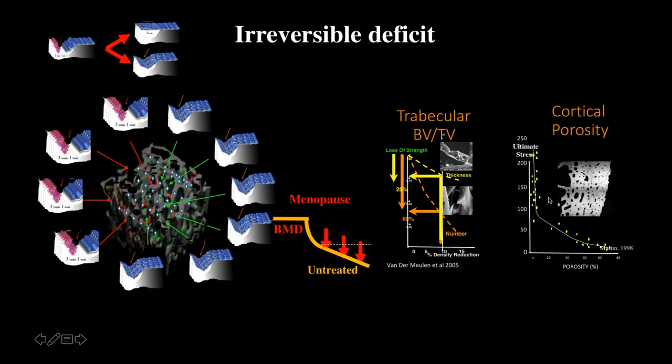Because of two abnormalities — the increase in the rate of remodeling so more bone is being turned over, and the negative balance in each remodeling site — there is structural decay. The trabeculae break up, the cortical bone becomes more porous, and there is a decrease in strength disproportionate to the bone loss. By old age, an elderly woman has lost half a skeleton, and whatever is left has decayed with porosity and separation of the trabeculae.